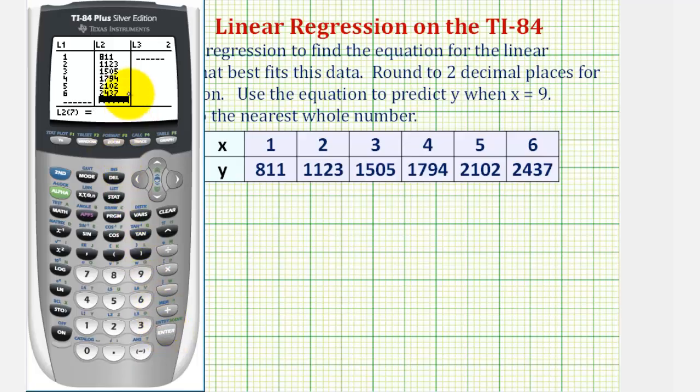It's important to double-check these values, because if we enter them wrong, we'll have the wrong equation. Everything looks good, so now we'll go back to the home screen, second mode for quit.